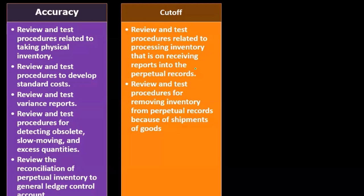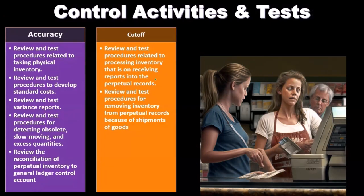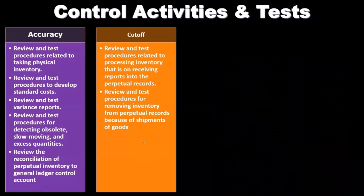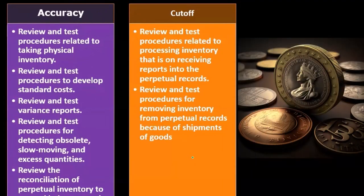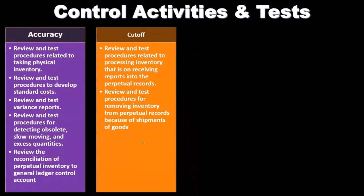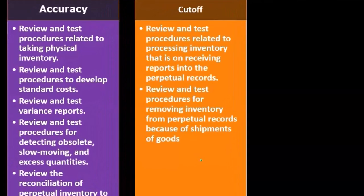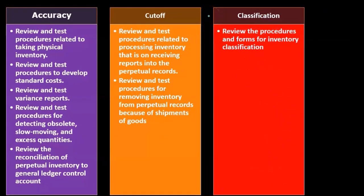This may sound like something from the purchasing process — and that's correct, because there's going to be overlap between the purchasing process and the inventory process, since inventory is often one of the major things purchased. Review and test procedures for removing inventory from the perpetual records because of shipment of goods. When we make sales, the perpetual inventory records go down. We want to test what triggers inventory to decrease — when we no longer have ownership, typically when shipping happens. That's what we tie to cutoff testing to ensure inventory going out lines up in the proper time period.